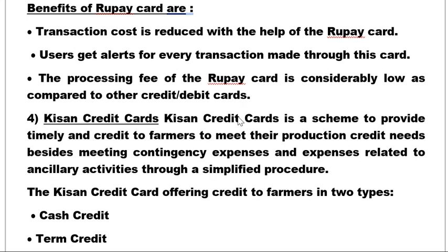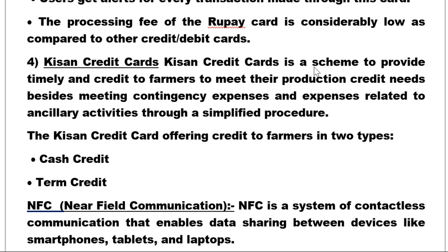The Kisan Credit Card is a scheme to provide timely credit to farmers to meet their production credit needs, contingency expenses, and expenses related to ancillary activities through a simplified procedure. It offers two types of credit: cash credit and term credit. This scheme is very popular in villages where farmers require contingent funds during their agriculture process.